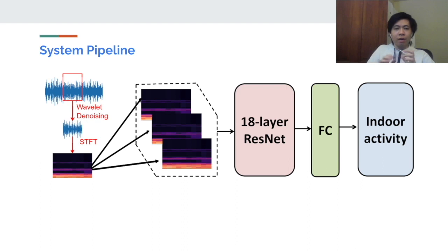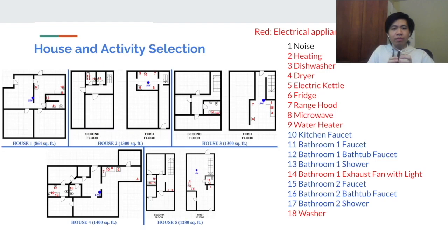Firstly, the vibration signal is segmented by a two-second sliding window, and then we apply wavelet denoising and short-time Fourier transformation and spectrum normalization. Next, the 2D spectrum will input into a CNN model to classify the indoor activities.